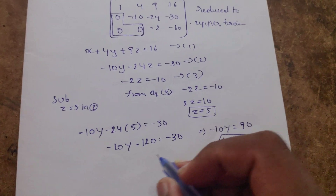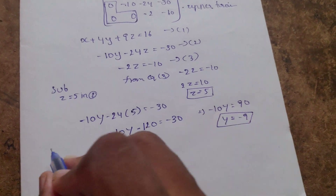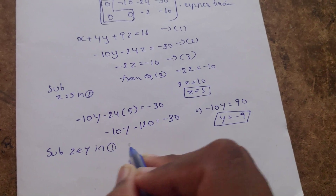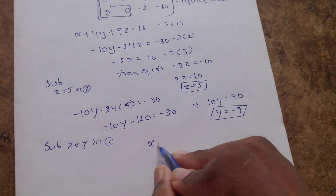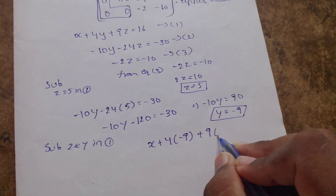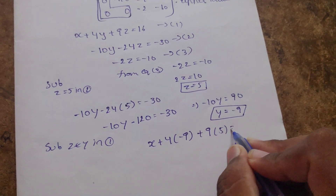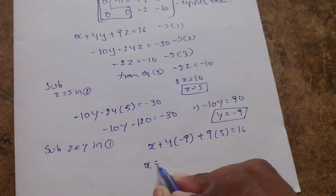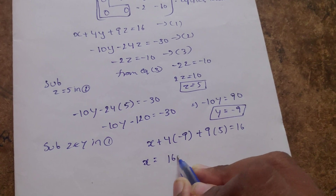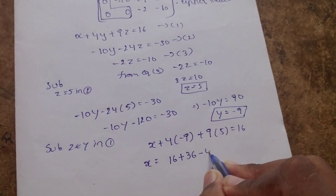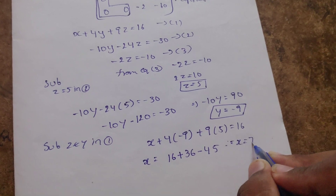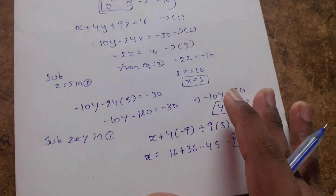So y equals minus 9. Now substitute y equals minus 9 and z equals 5 into equation 1. x plus 4 times minus 9 plus 9 times 5 equals 16. x equals 36 plus 16 minus 45, so x equals 7.